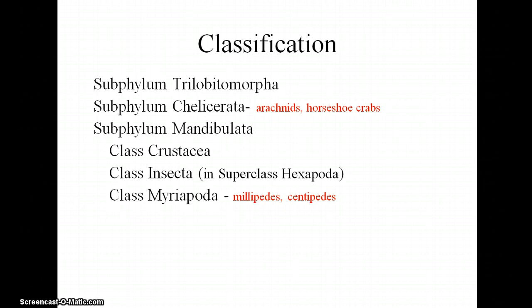The chelicerates have mouth parts called chelicera, and they include arachnids, which includes spiders and other arachnids such as scorpions and ticks and mites. Also, the horseshoe crabs are in the subphylum chelicerata. People tend to mix them up and think that they're crustaceans, but they're not. They're actually chelicerates.